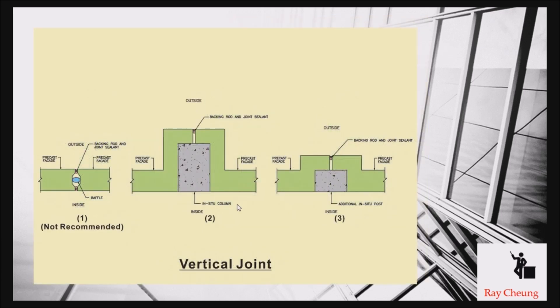For vertical jointing, there are three comparisons for you. If we just provide waterproofing, the first one may not be very good. If you provide the jointing near the column, it should be much better. When water emerges, it cannot go directly behind the concrete columns. The second is better, and the third one should be the best.